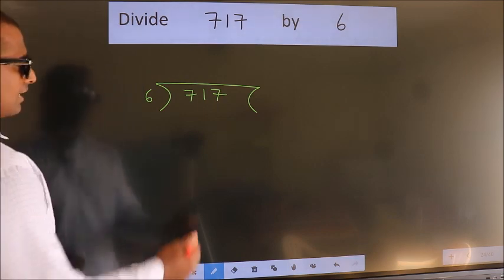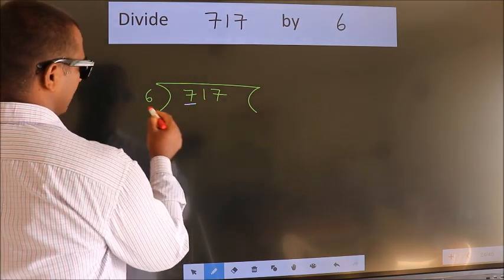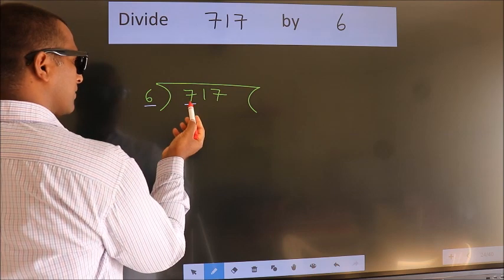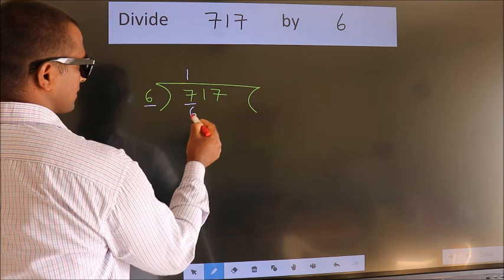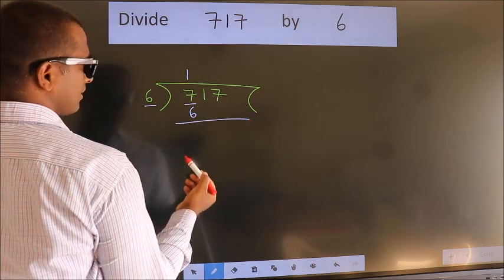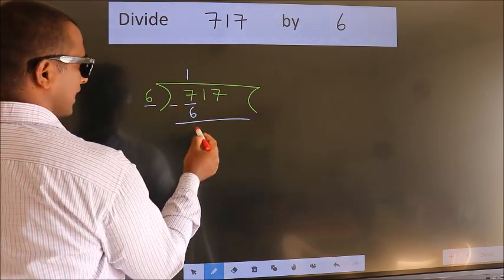Next. Here we have 7. Here 6. A number close to 7 in 6 table is 6 once 6. Now we should subtract. We get 1.